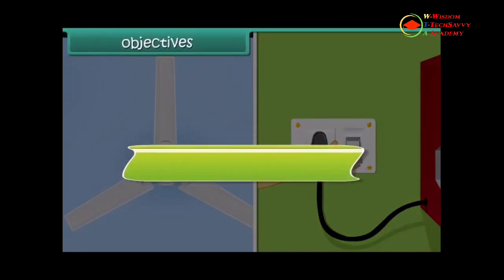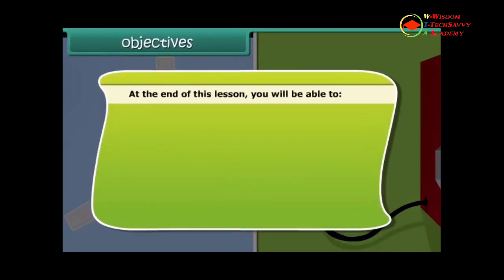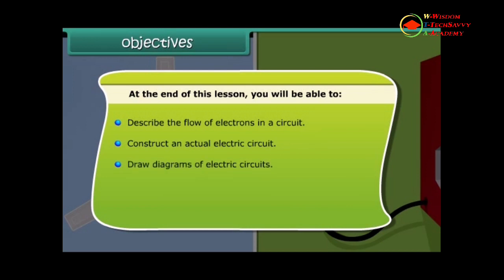Objectives. At the end of this lesson, you will be able to describe the flow of electrons in a circuit, construct an actual electric circuit, draw diagrams of electric circuits, and explain the path of an electric circuit.